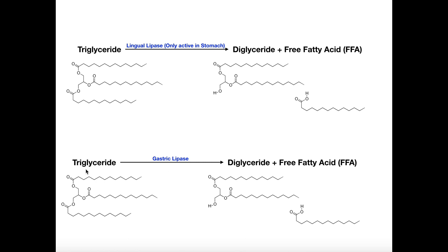We have triglycerides that have not been digested yet at all. When they get into the stomach from the bolus and get mixed in with the chyme, the triglycerides are going to be degraded into diglycerides and free fatty acids. The whole goal is to break down all of the triglycerides into individual free fatty acids. The diglycerides can be degraded further by gastric lipase and other lipases later in the small intestine.